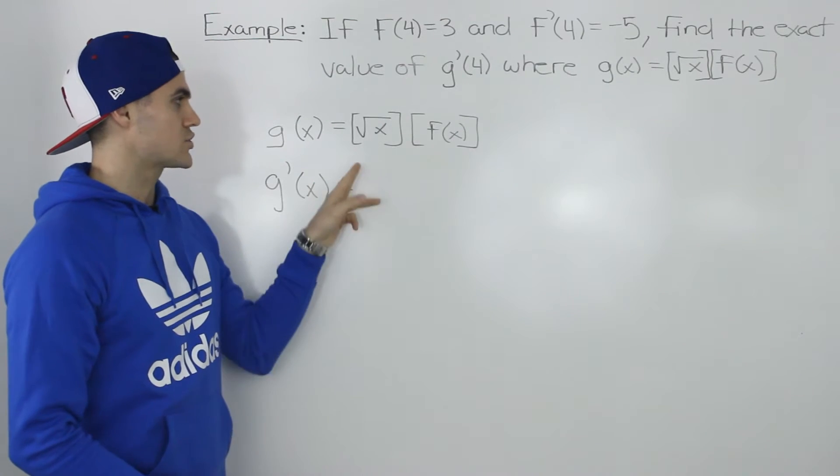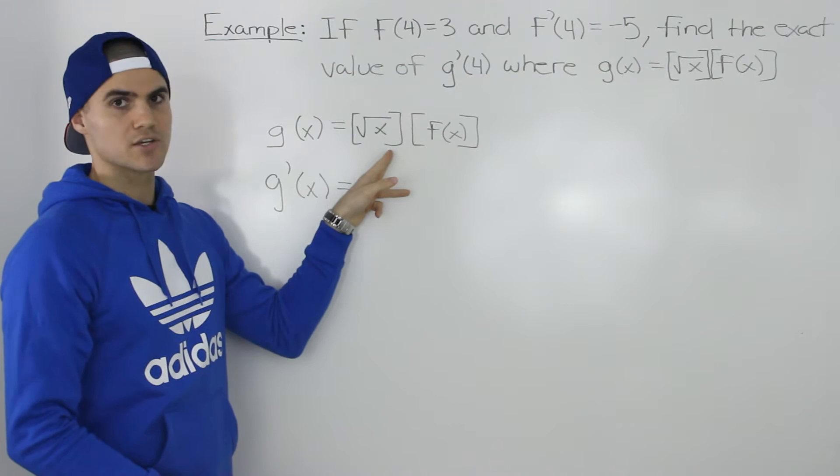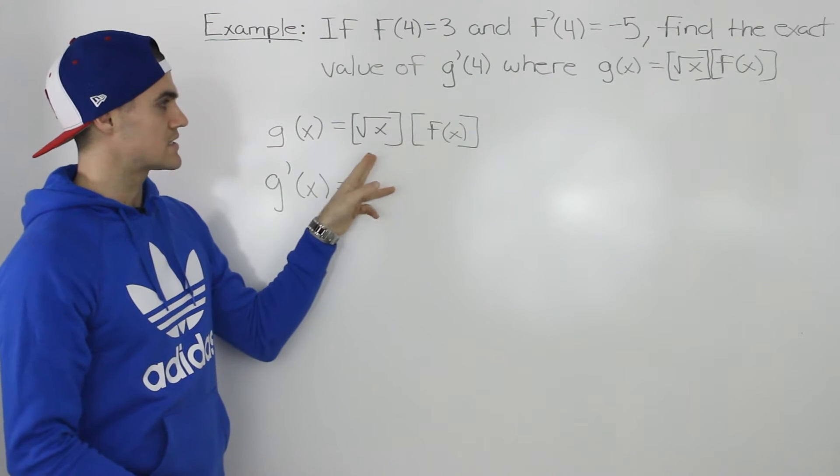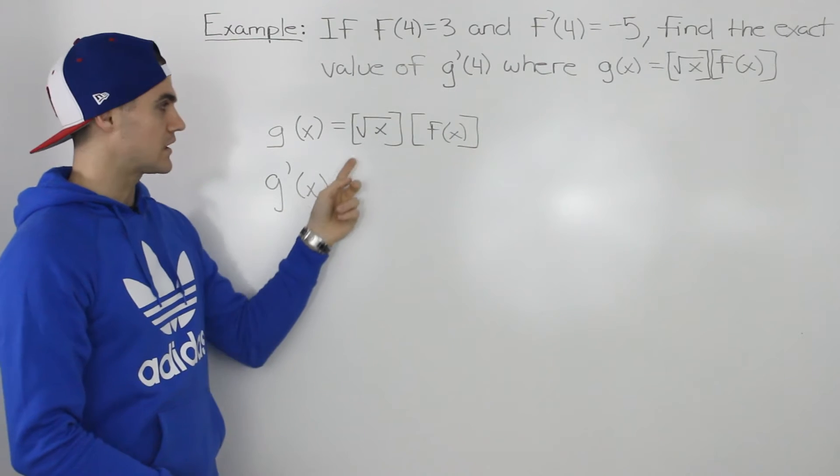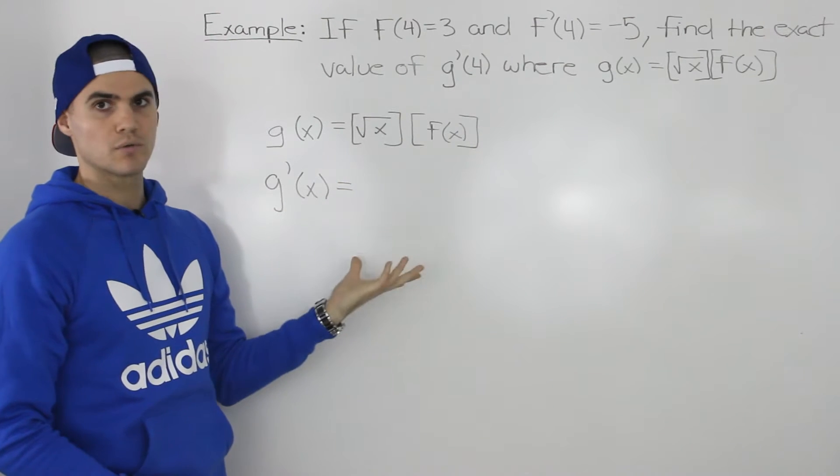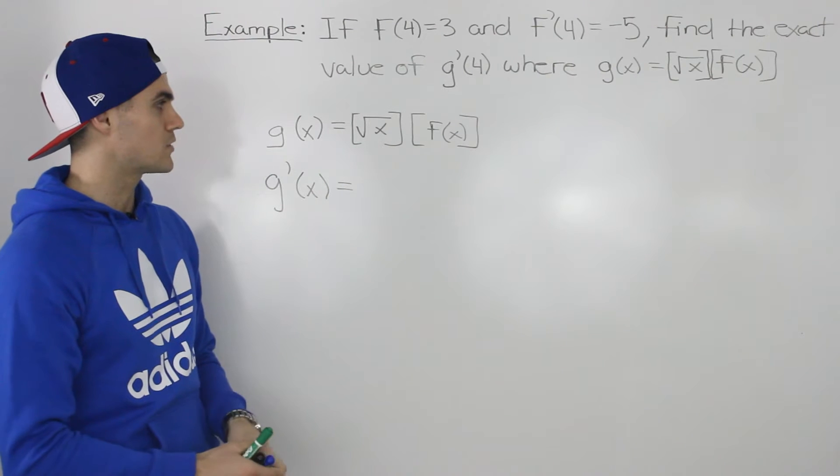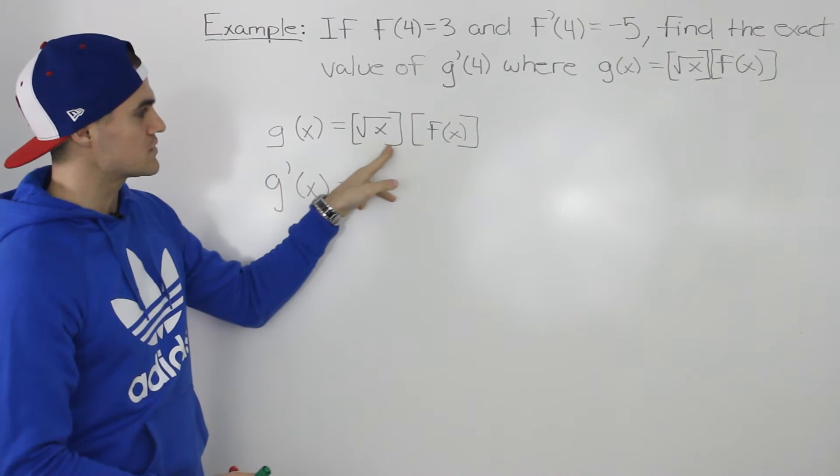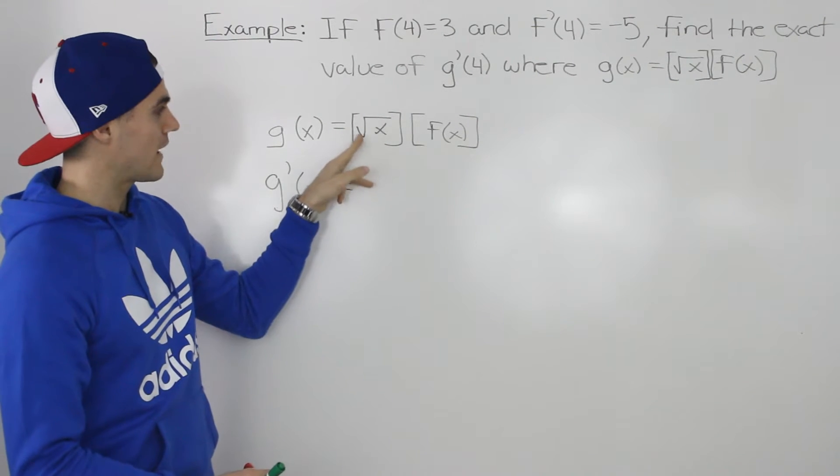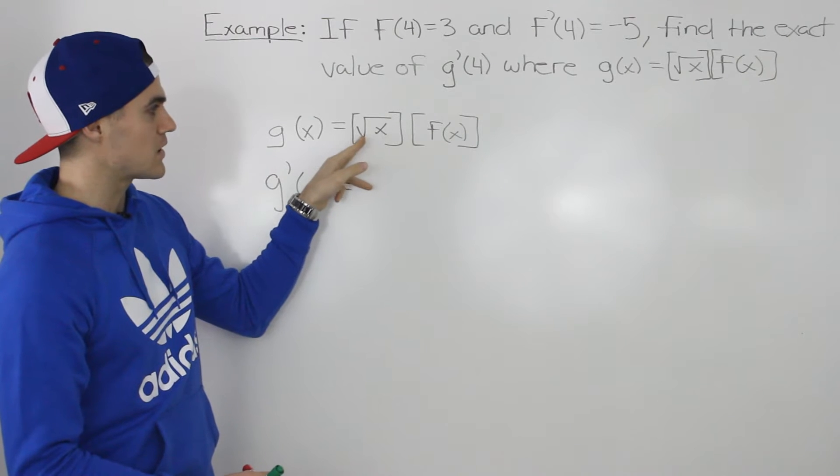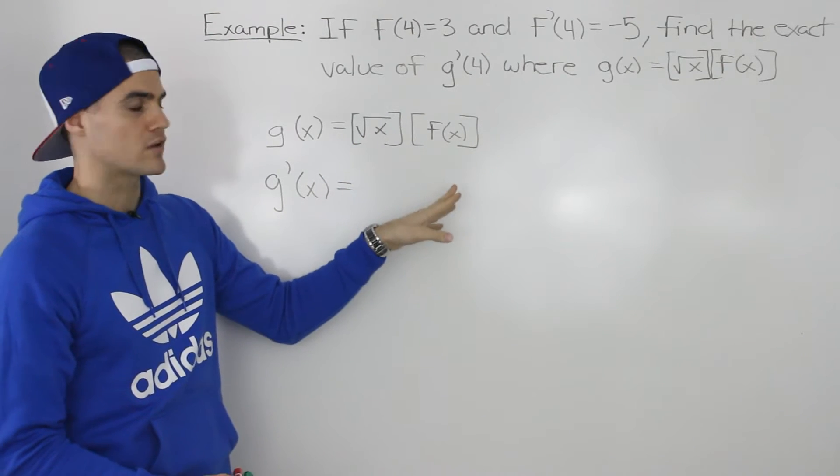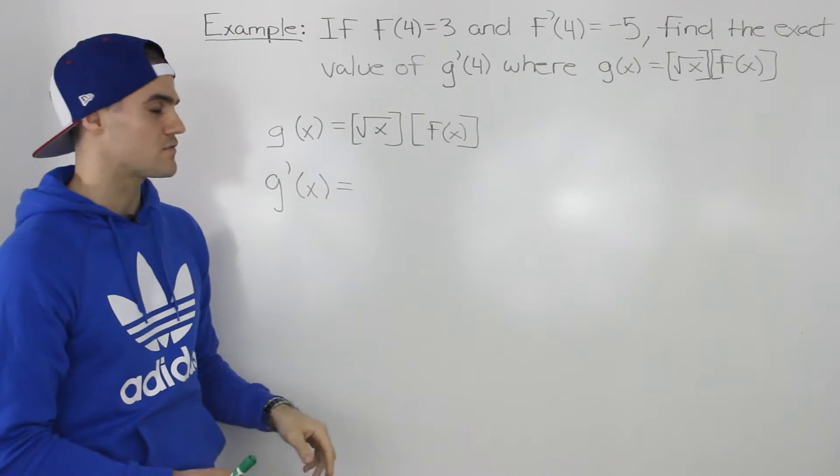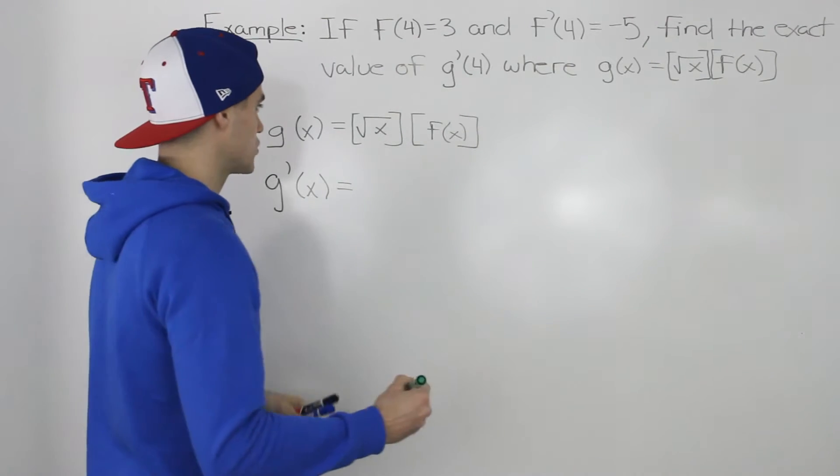Well, because this function is two functions multiplied by each other, even though it's in a weird format we haven't seen before, to find the derivative we would just use the product rule. Same thing would apply. It's just when we're dealing with this first function here, we would actually deal with that exact expression, the square root of x, and when we're dealing with this function here, we would keep everything in general terms, in terms of f(x). So let me show you what I mean.